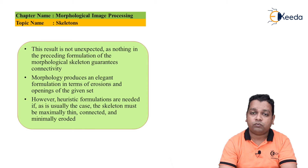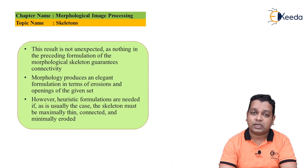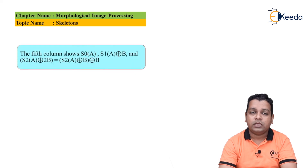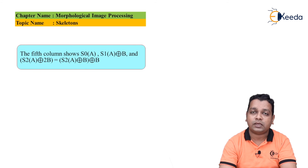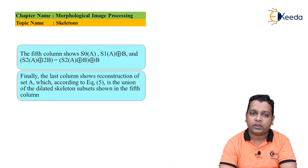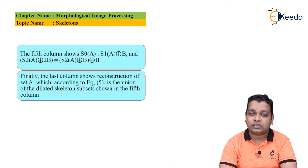However, heuristic formulations are needed if, as is usually the case, the skeleton must be maximally thin, connected, and minimally eroded. The fifth column shows S_0(A), S_1(A) dilated by B, and S_2(A) dilated by B for two successive steps. The last column shows the reconstruction of set A, which is the union of the dilated skeleton subsets shown in the fifth column.